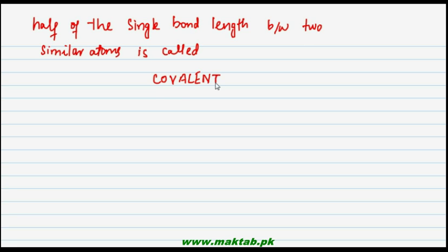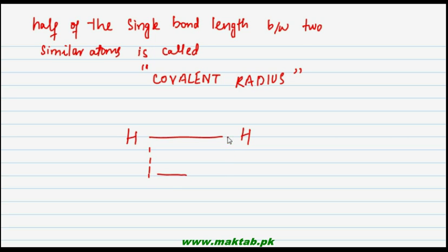What should be clear after reading this definition — let me take the example of hydrogen. Here is one hydrogen atom and here is another hydrogen atom. The distance between the two bonded atoms — let's call it x. So the single bond length is x, and we take half of that — x divided by 2 — between two similar atoms.